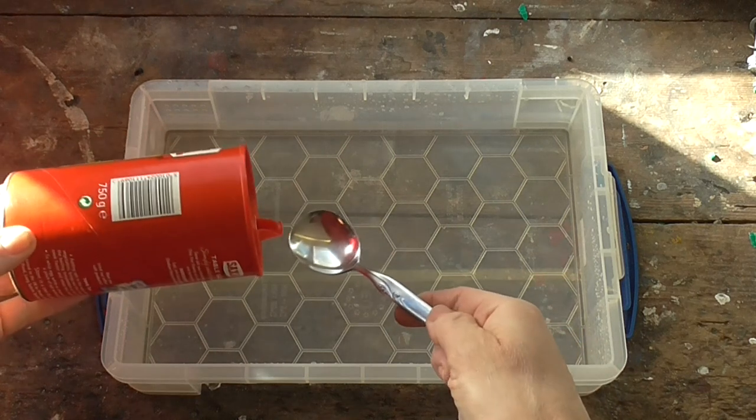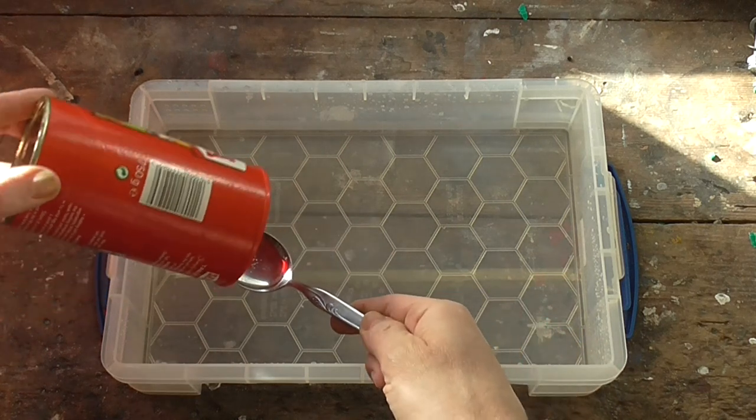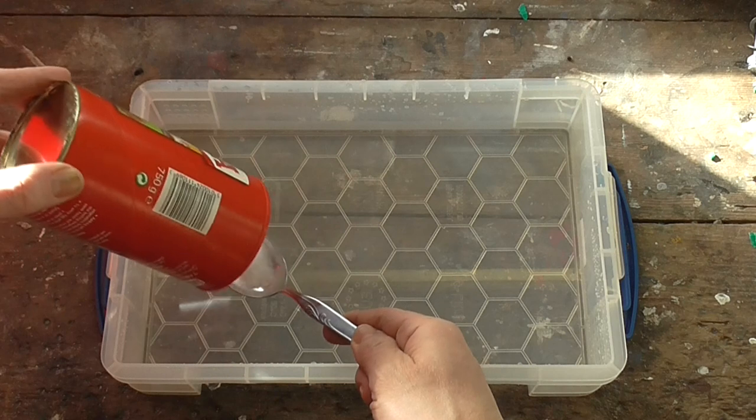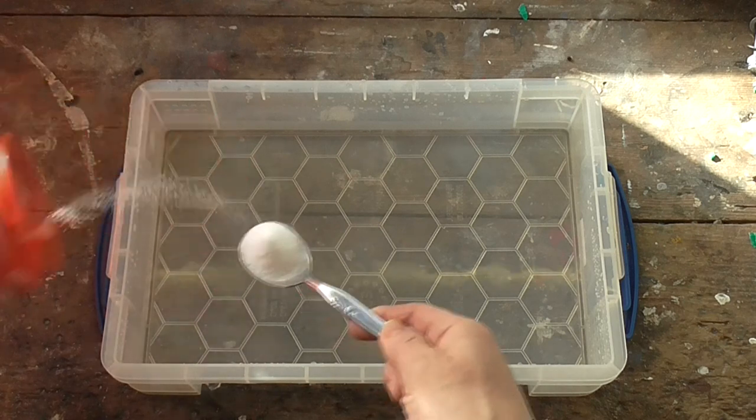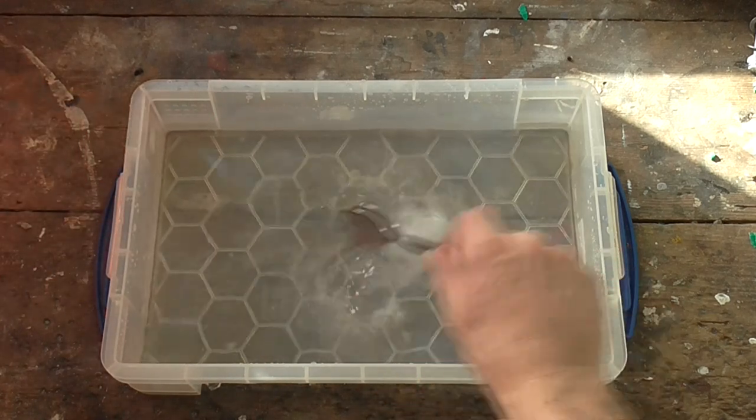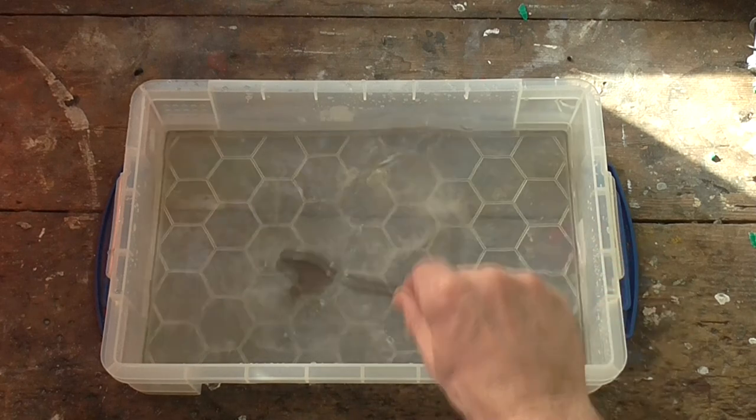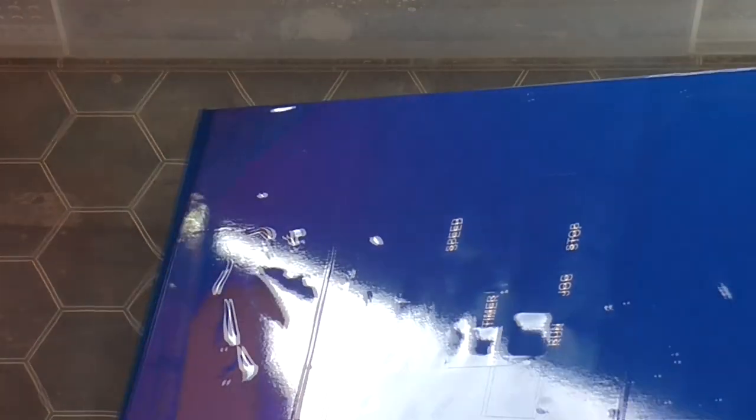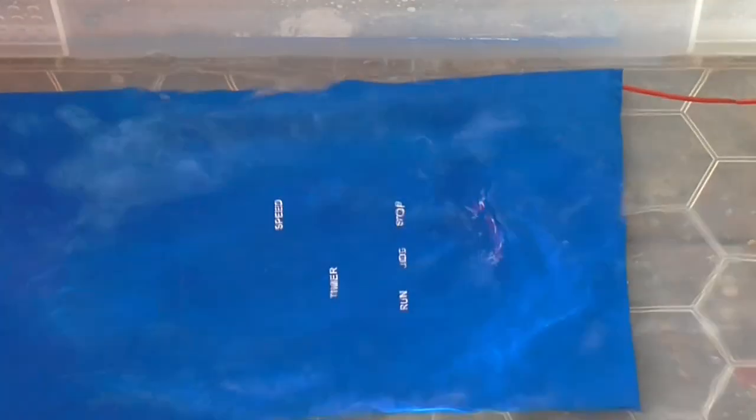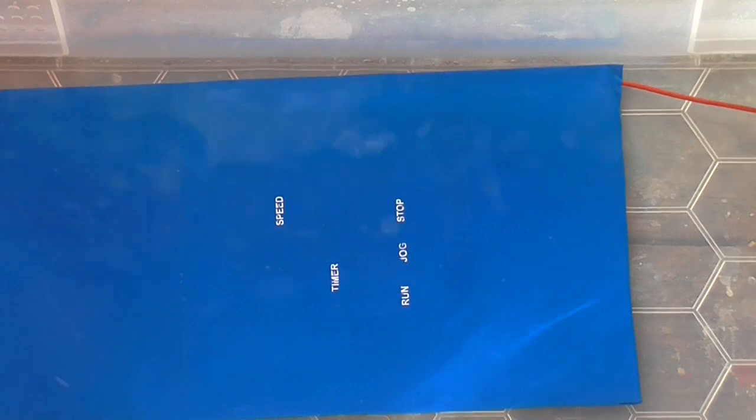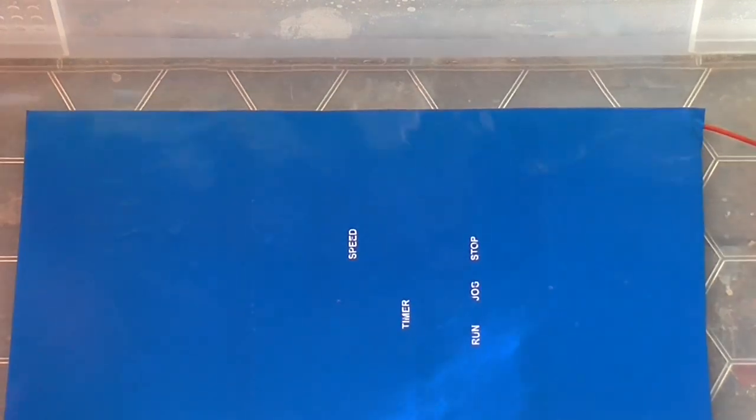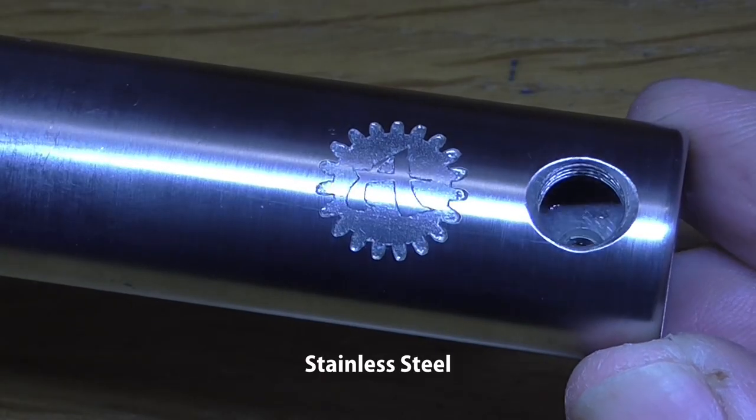For the electrolyte solution, I'm using tap water with a large spoonful of ordinary table salt. Unlike electroplating, the electrolyte does not need to contain the same metal as the workpiece. It just needs to make the water conductive. The panel I'm etching here is aluminum, but this also works on brass, mild steel and even stainless steel, though the rate of etching is much slower.